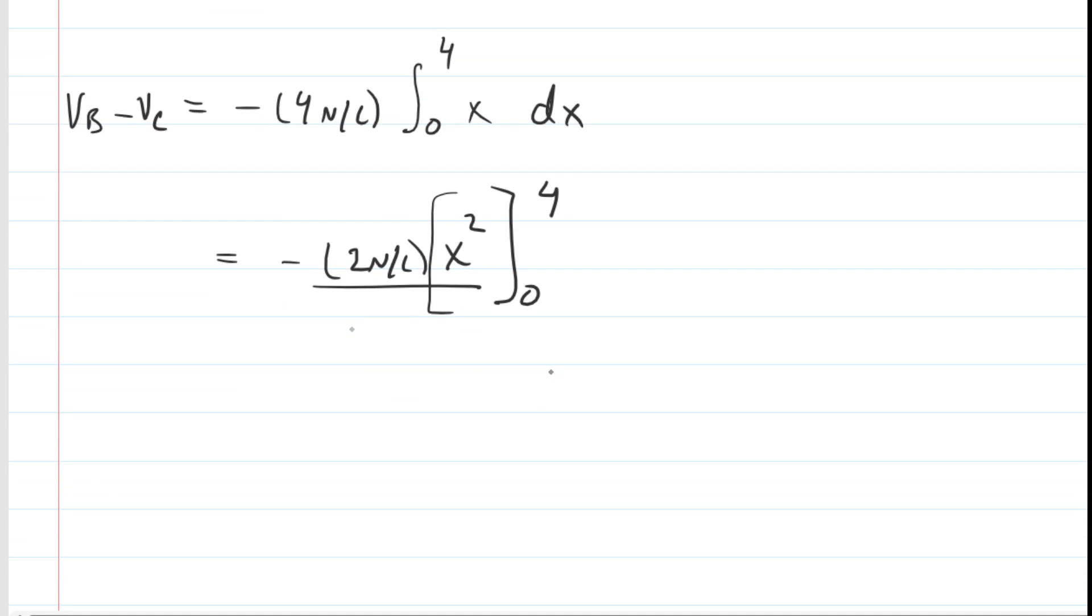Now we plug in the upper bound first. We get four squared, which is going to be 16. And then we plug in the lower bound zero, but that's just going to be zero. We end up subtracting them according to the lovely rules of calculus, and we end up with negative 32. Now the unit here, we've got to be careful. It's not newtons per coulomb. This is a potential difference between two points, so it does work out to be volts.